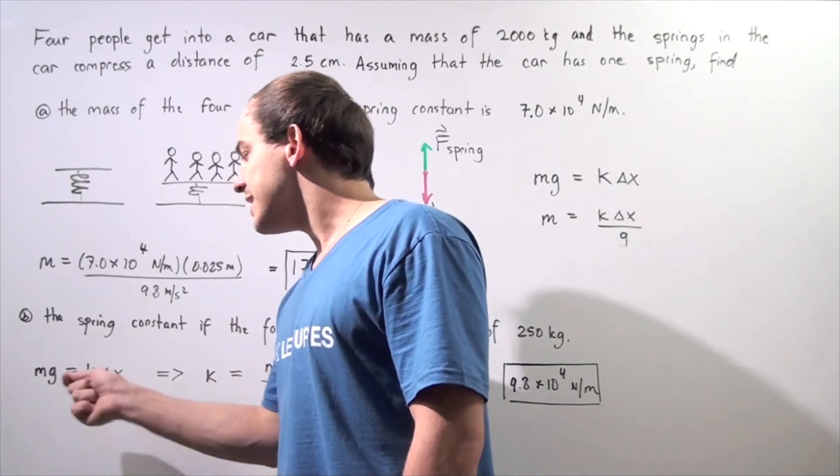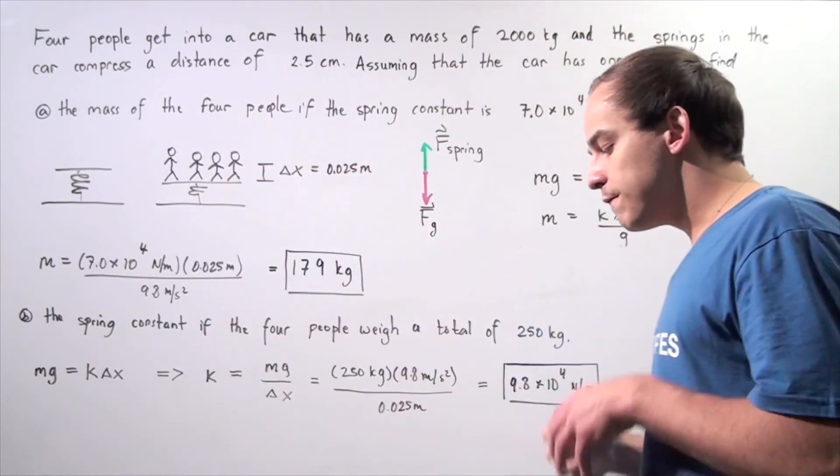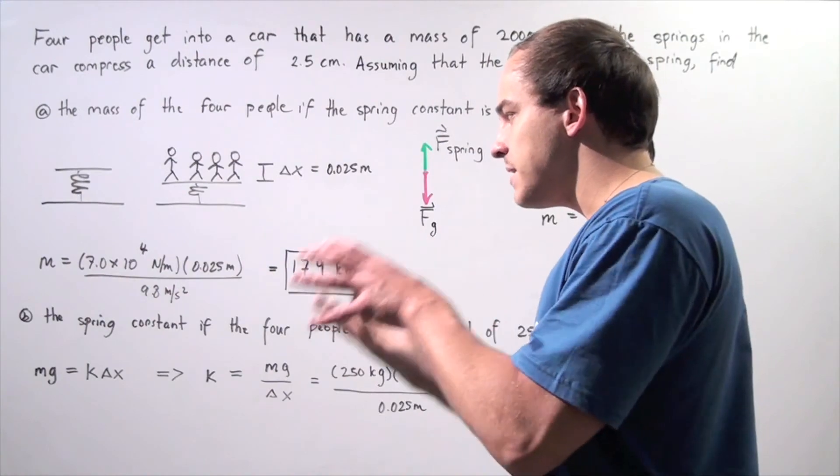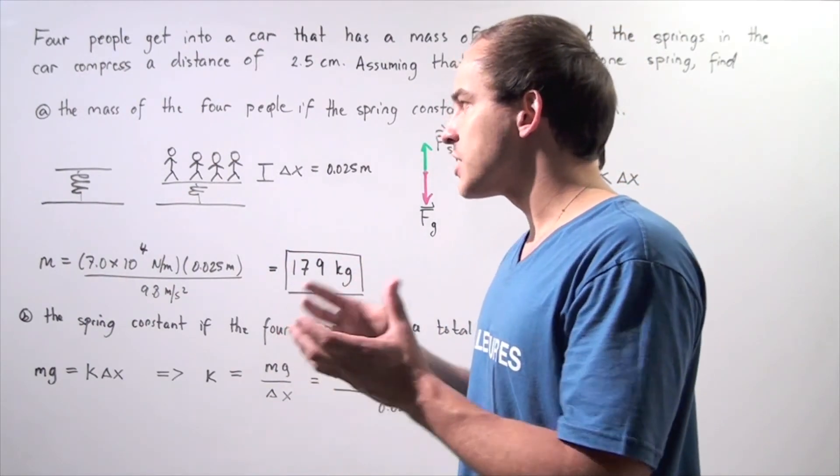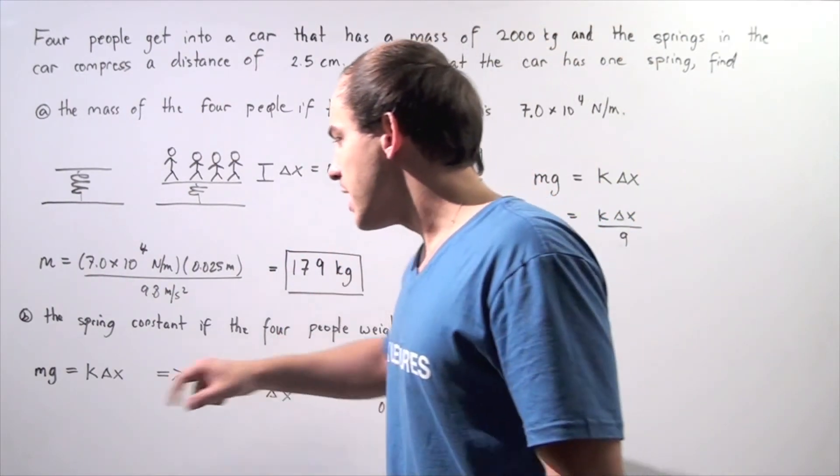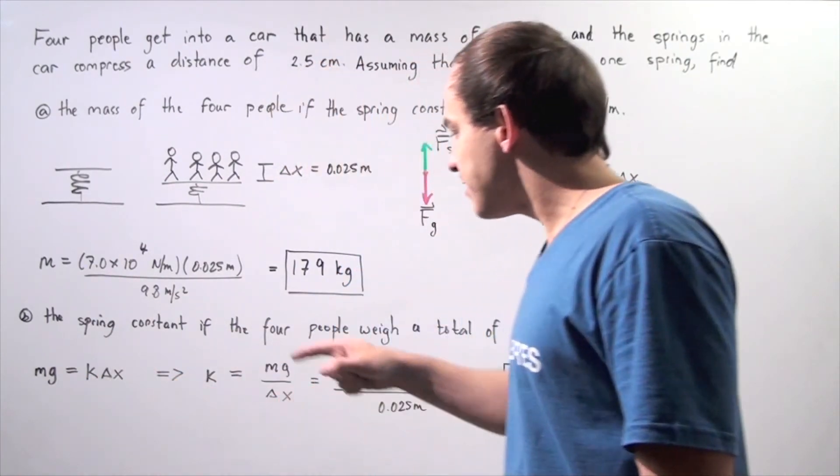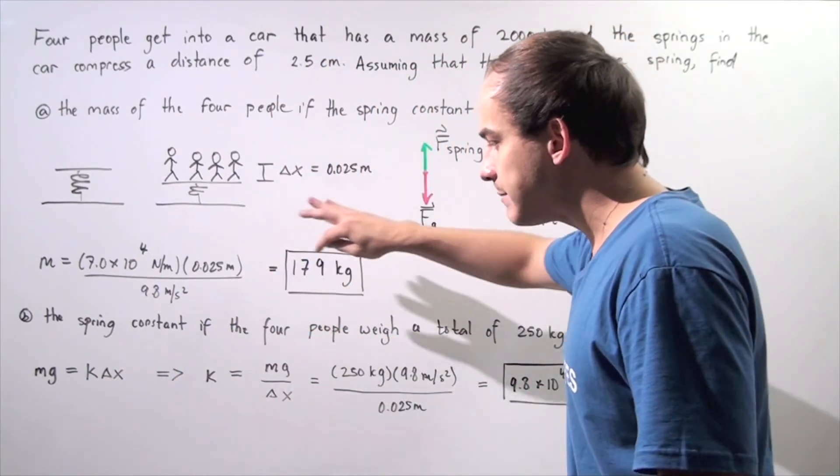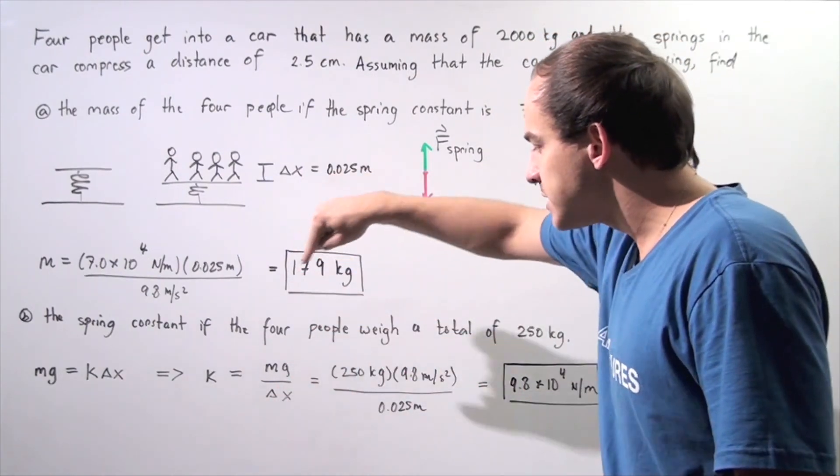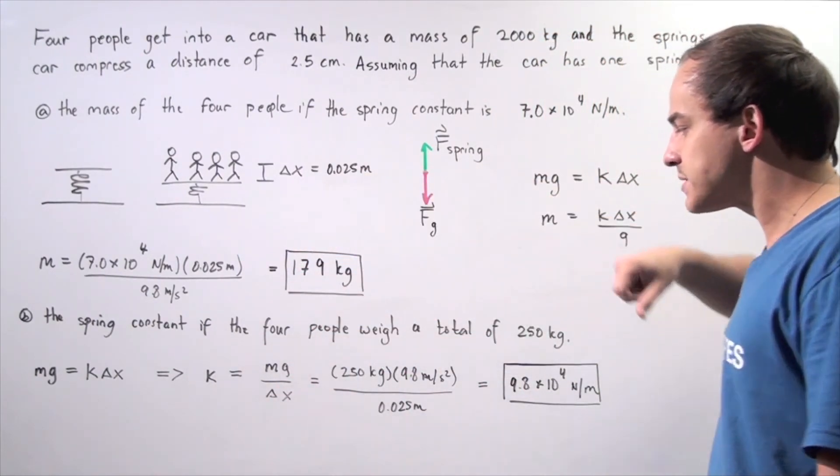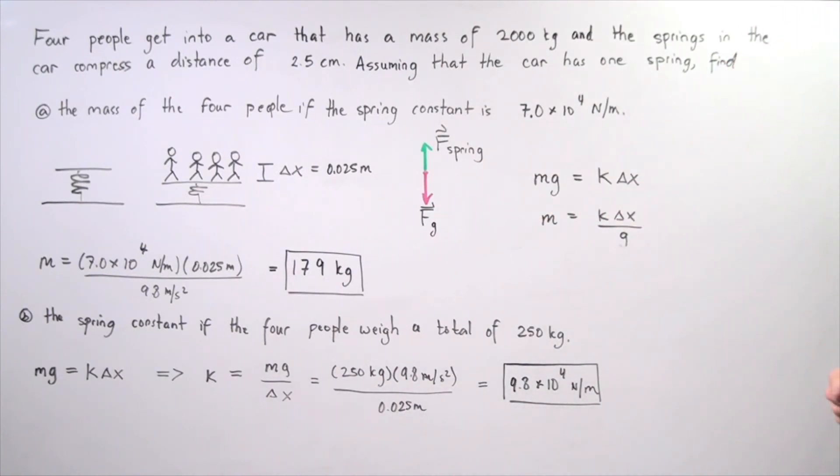m times g is equal to k times change in x. The force of gravity acting on the people is equal to the spring force that's acting on those people. We isolate our k, and say that k is equal to m times g divided by change in x. So m times g is 250 kilograms times 9.8 meters per second squared, divide that by a displacement of 0.025 meters, and we obtain a value of 9.8 times 10 to the 4 newtons per meter as the spring constant.